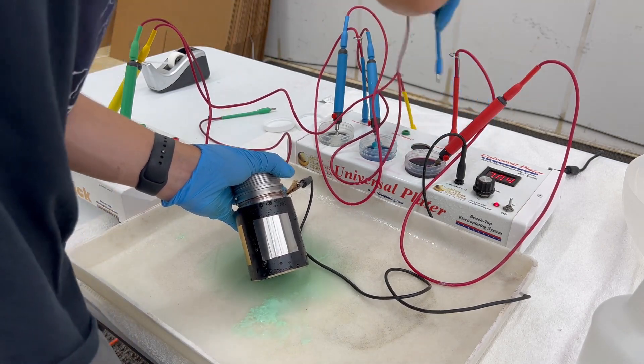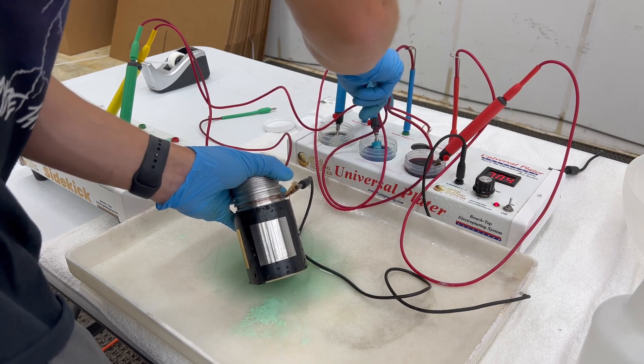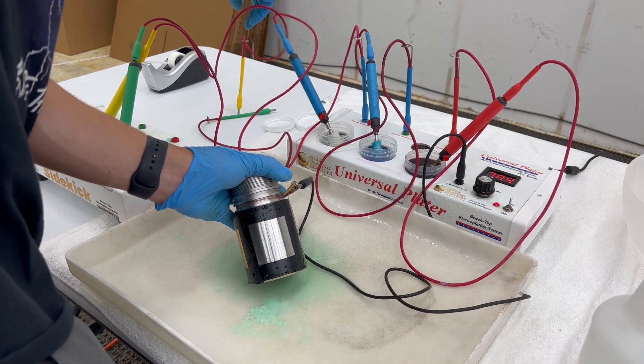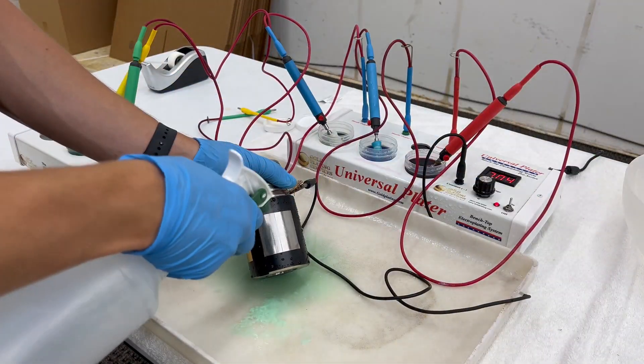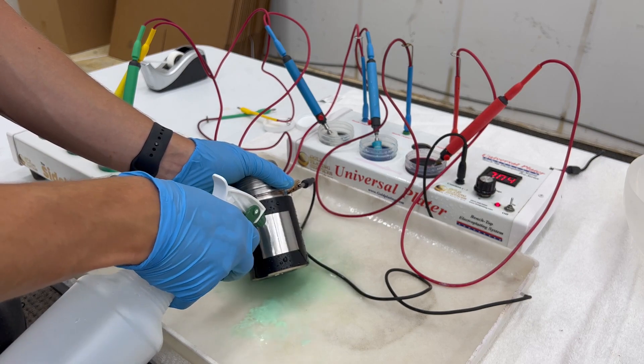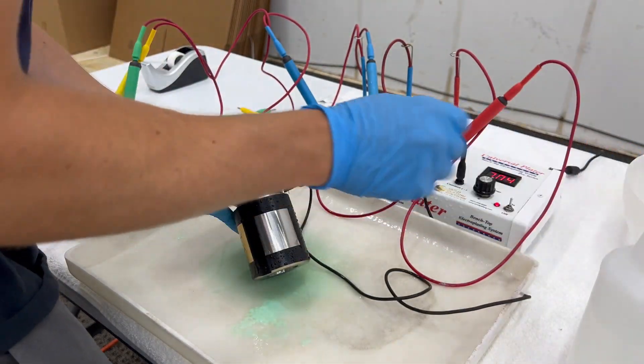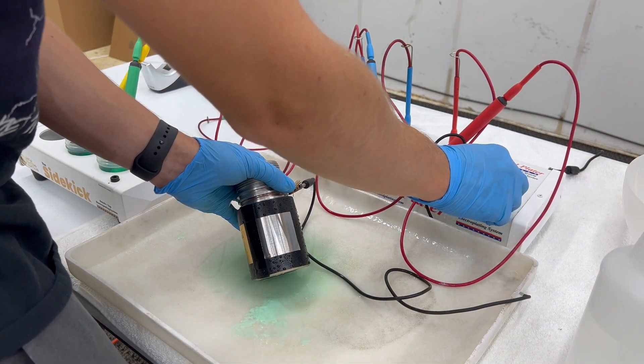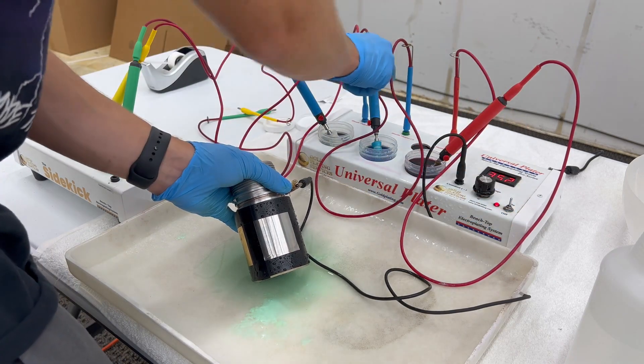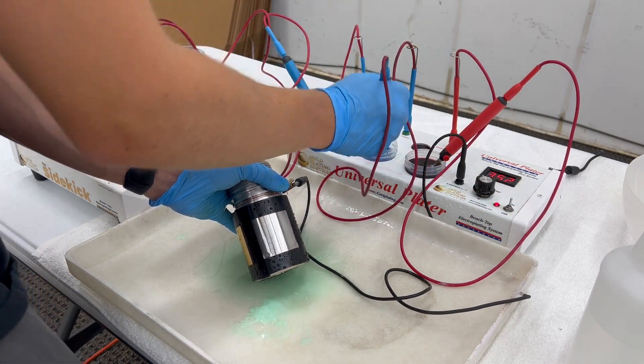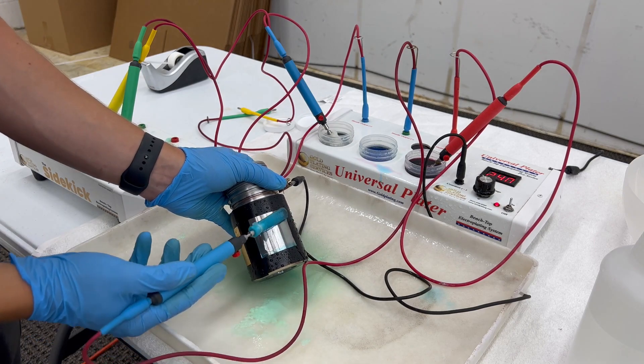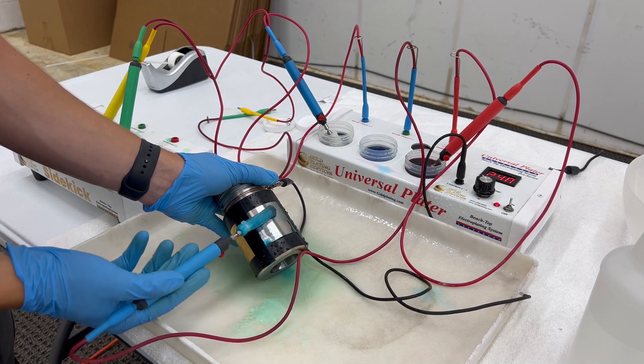That whole piece has been activated. Now I have to switch out this and put in our copper strike. Move all these cords out of the way, rinse off your part. We're going to get this copper—we're going to need to plate it at three and a half volts.